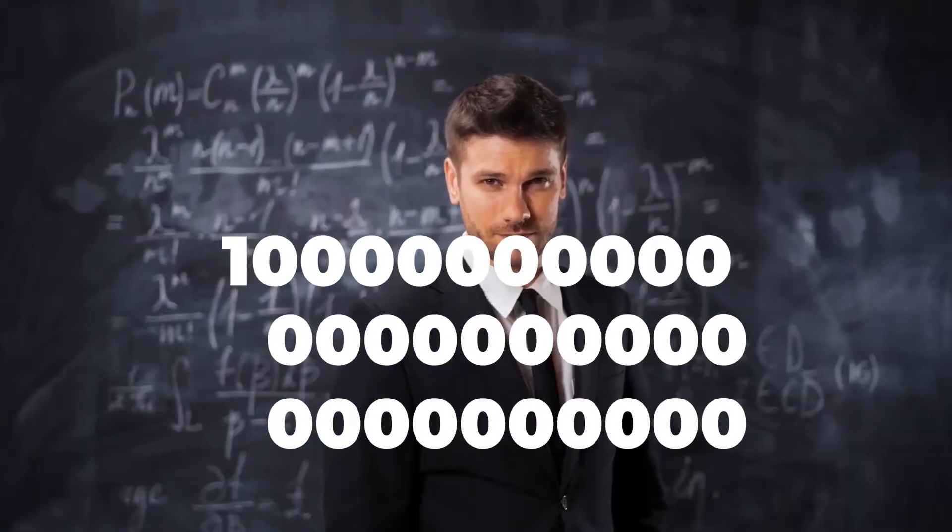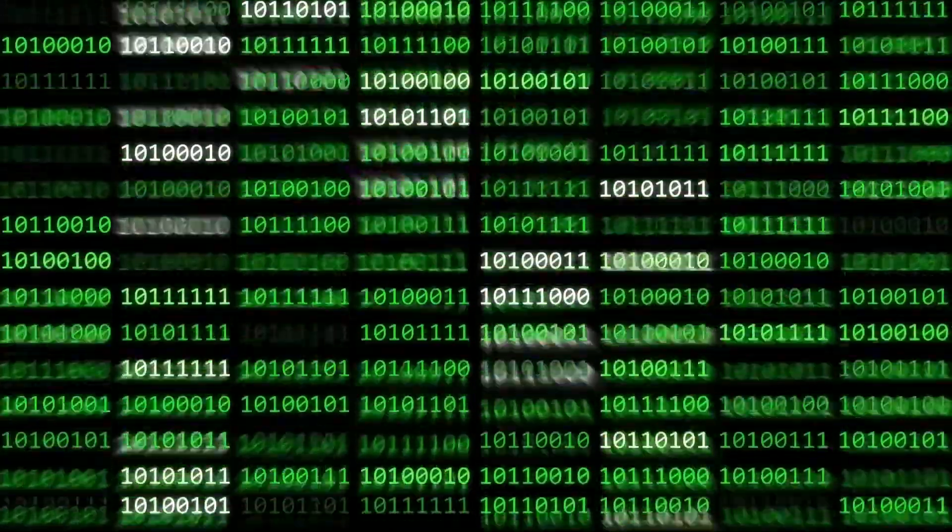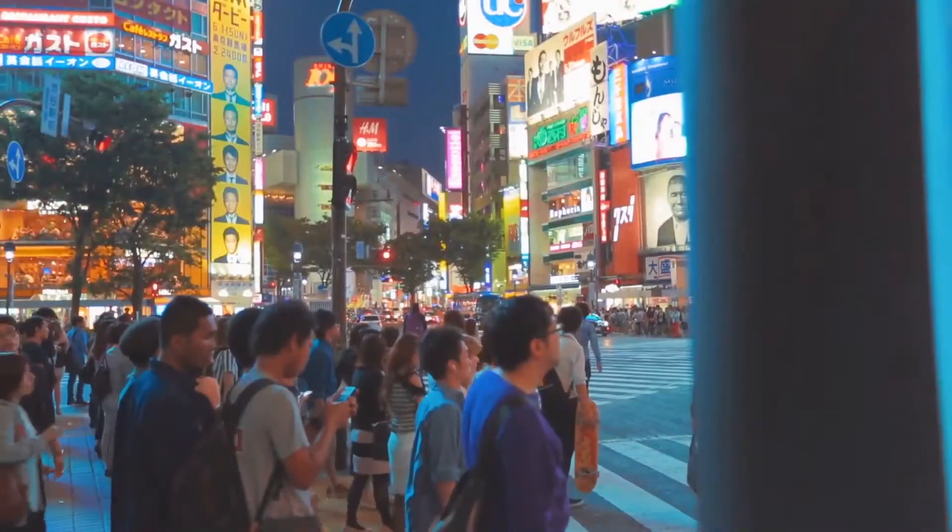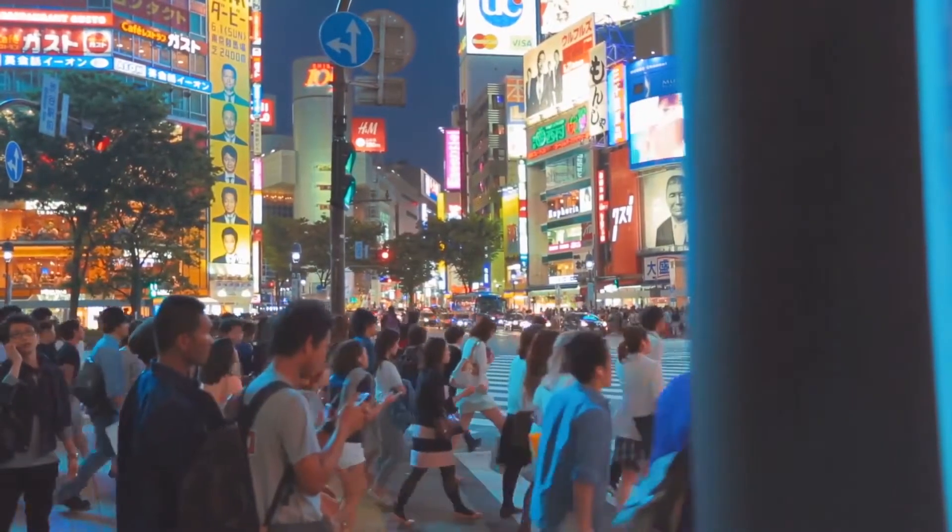You see this number, right? It's one nonillion. It has 54 zeros, and having that much population on Earth is itself a bad sign.